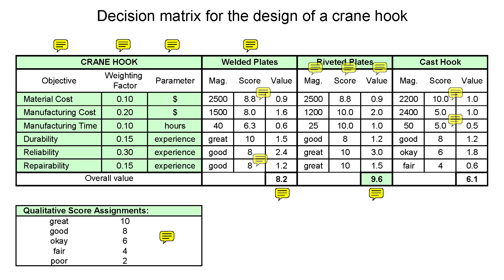We begin by selecting the objectives that are important for the design concepts under evaluation. For each selected objective, we next assign weighting factors based on how important each objective is to the overall success of the design. In this example, reliability has the highest weighting factor because if the crane hook fails, people can be killed or cargo can be destroyed. Notice all the weighting factors must sum to 1, or 100%. The parameter column lists the units for each objective. There are quantitative parameters such as cost, time, and speed, and there are qualitative objectives such as reliability, repairability, and controllability. Quantitative objectives can be quantified by calculating a value from an equation, whereas qualitative objectives are assigned values based on the relative comparison of different design concepts.